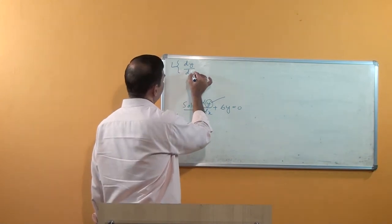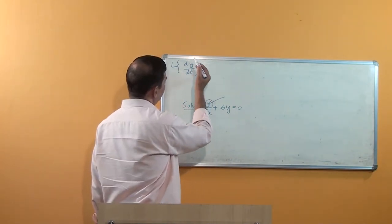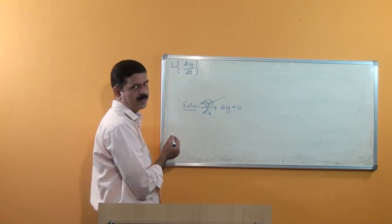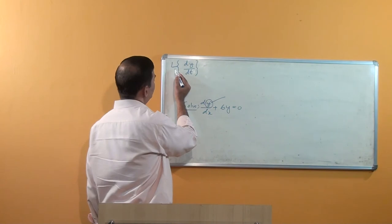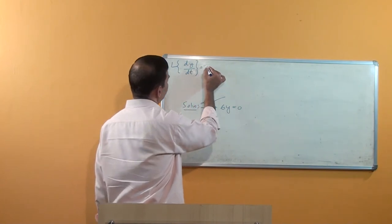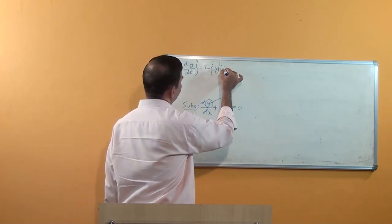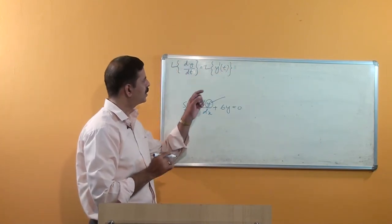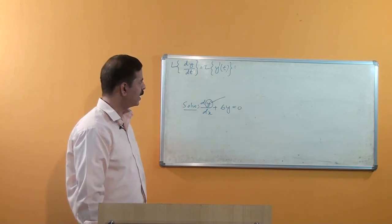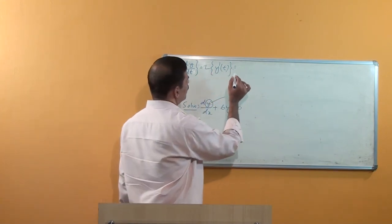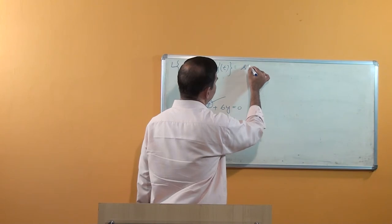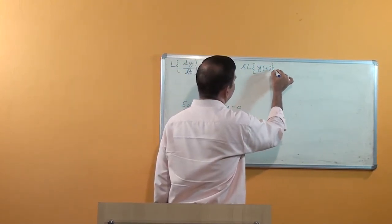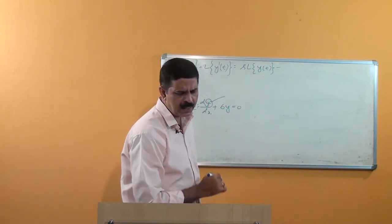In the Laplace transform, the independent variable is t. The Laplace of dy/dt, written in shorthand as y'(t), is given by the theorem: Laplace of y'(t) equals s times Laplace of y(t) minus y(0).